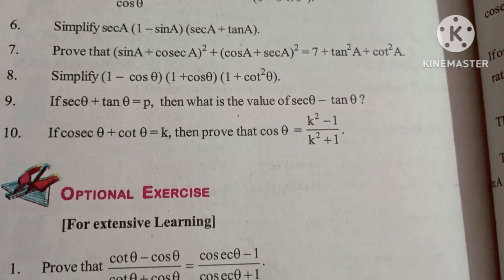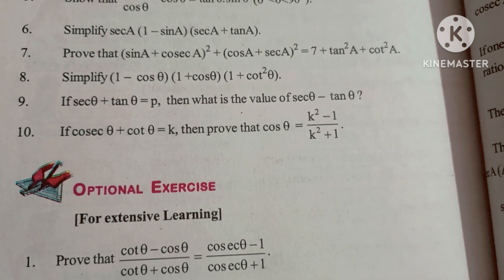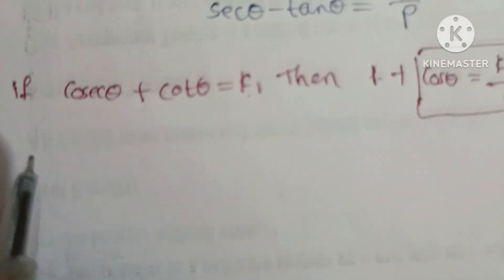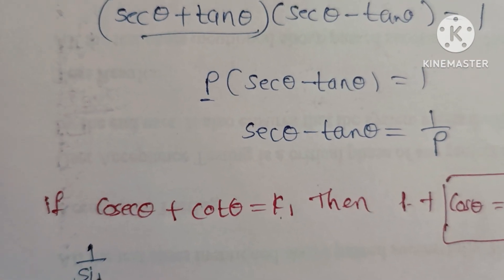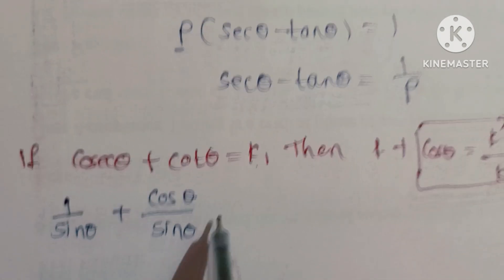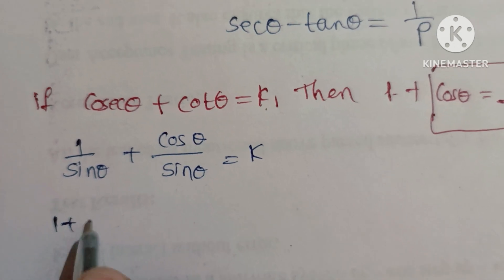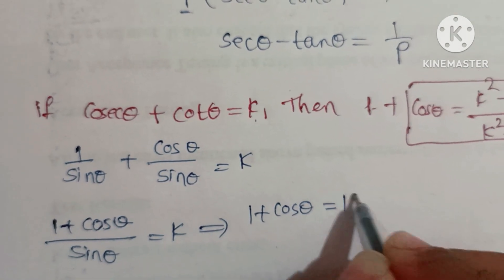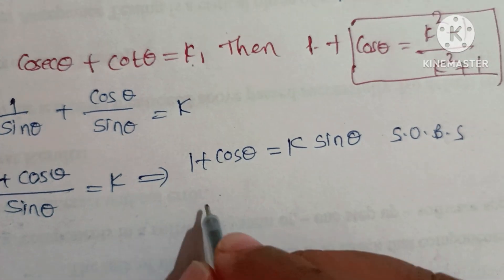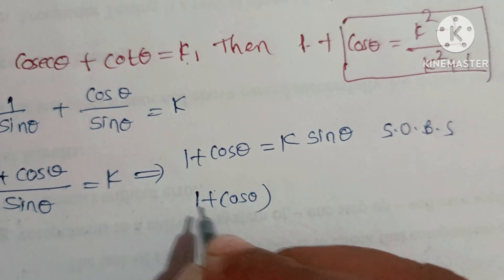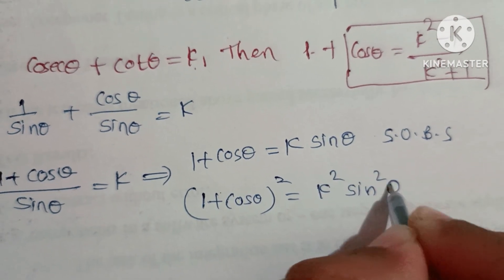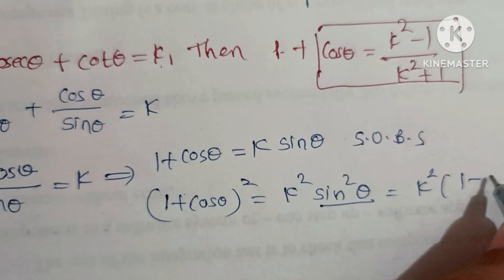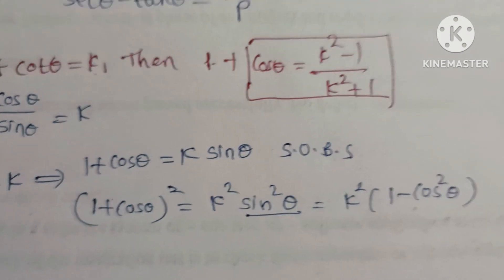Last question: If cosecθ + cotθ = k, prove that cosθ = (k² - 1)/(k² + 1). Write cosecθ = 1/sinθ and cotθ = cosθ/sinθ. Taking LCM sinθ: (1 + cosθ)/sinθ = k, so 1 + cosθ = k·sinθ. Squaring both sides: (1 + cosθ)² = k²·sin²θ.